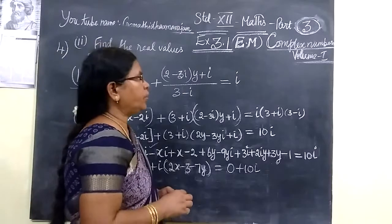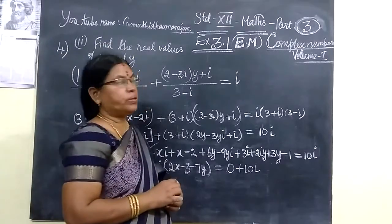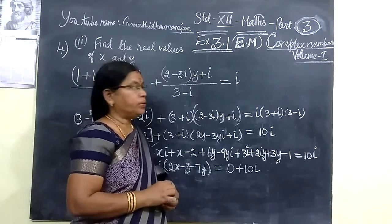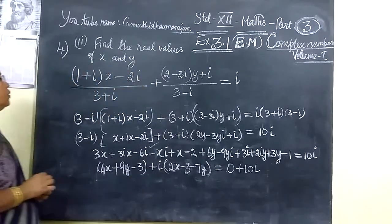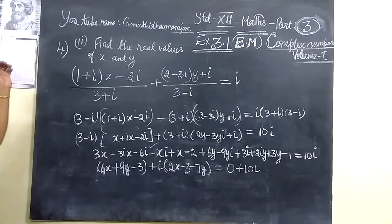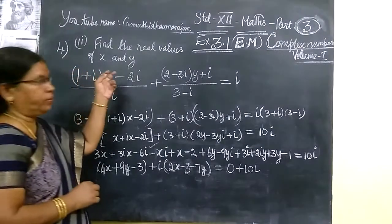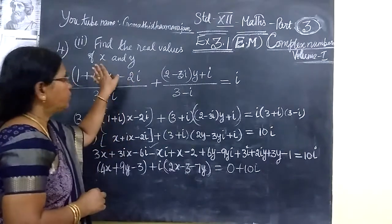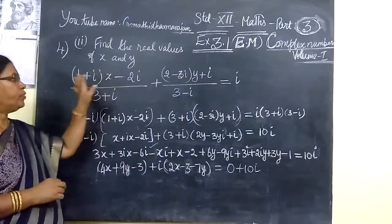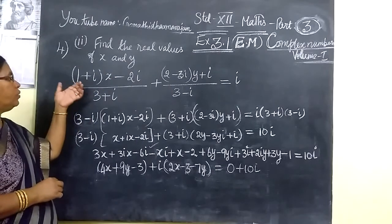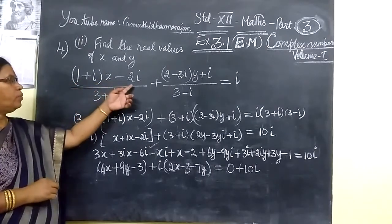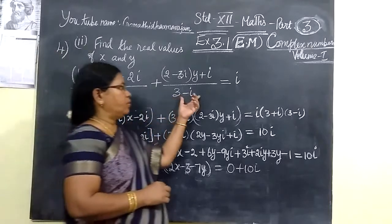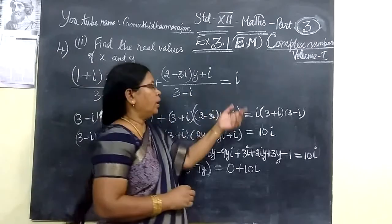Bringing to us today, we want to see the cost of complex numbers, Part 3. So in Part 3, we see the fourth question: find the real value of x and y. We are going to find the value of x and y. In the last class also, we have done the same type of problem. So you see the question: (1+i)x - 2i divided by (3+i), and this is equal to i.